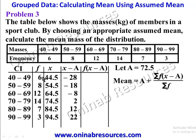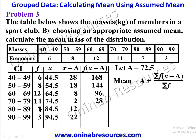For the f times (x minus a) column: 6 times negative 28 gives negative 168; 8 times negative 18 gives negative 144; 12 times negative 8 gives negative 96; 14 times 2 gives 28; 7 times 12 gives 84; and 3 times 22 gives 66.